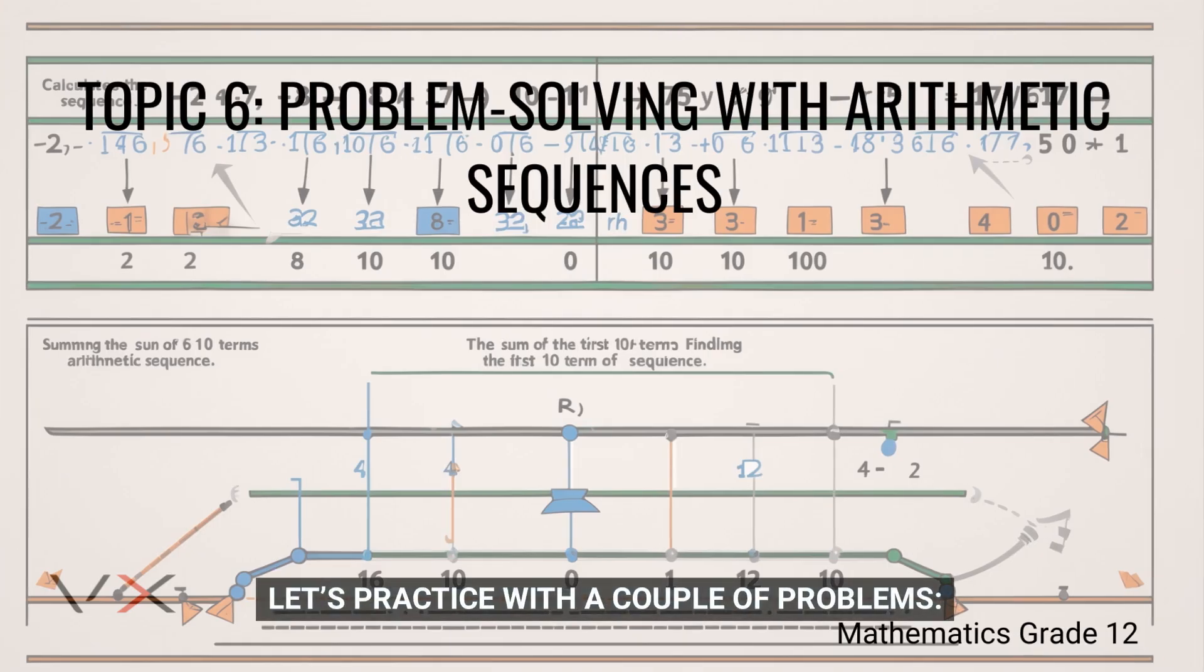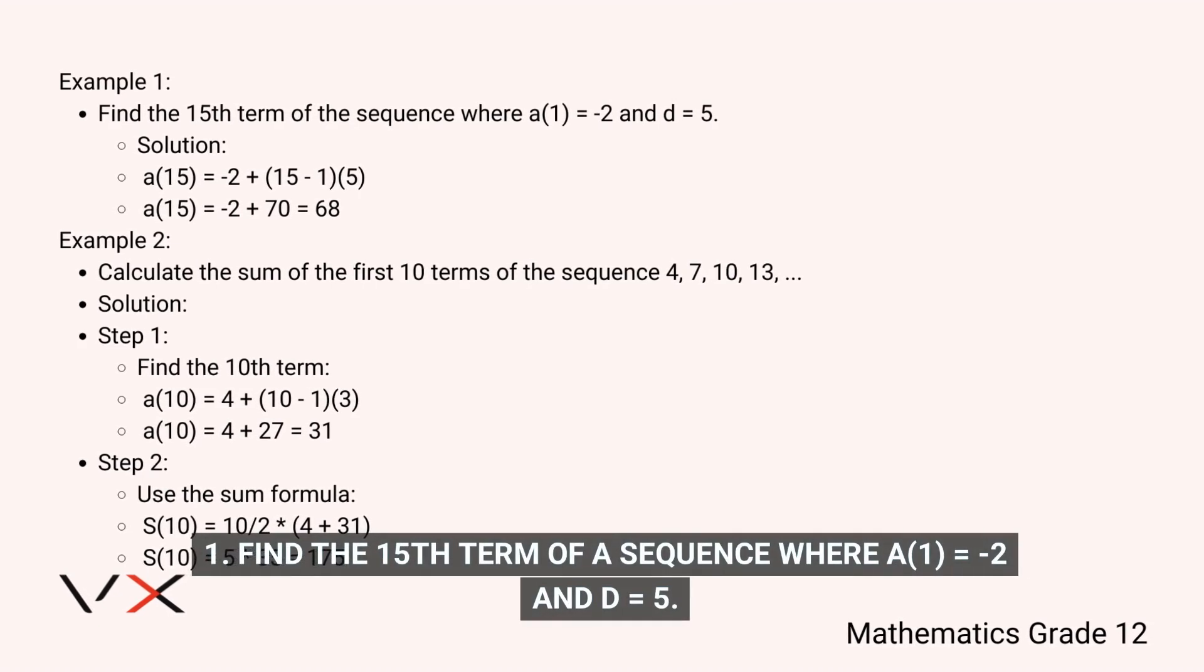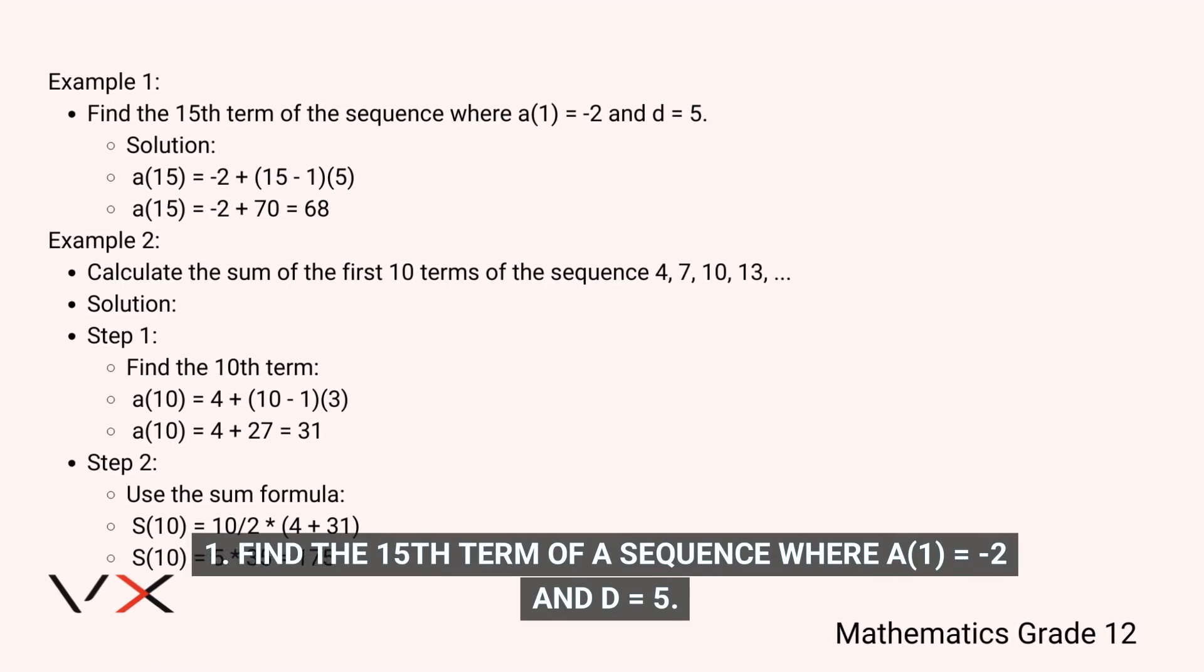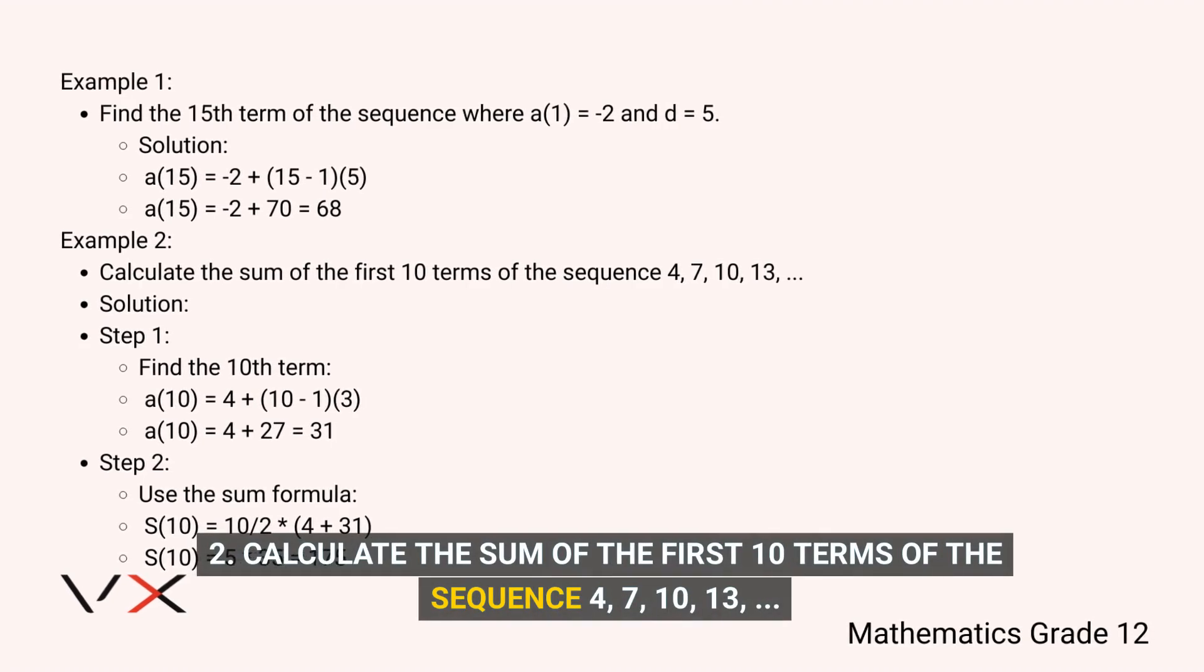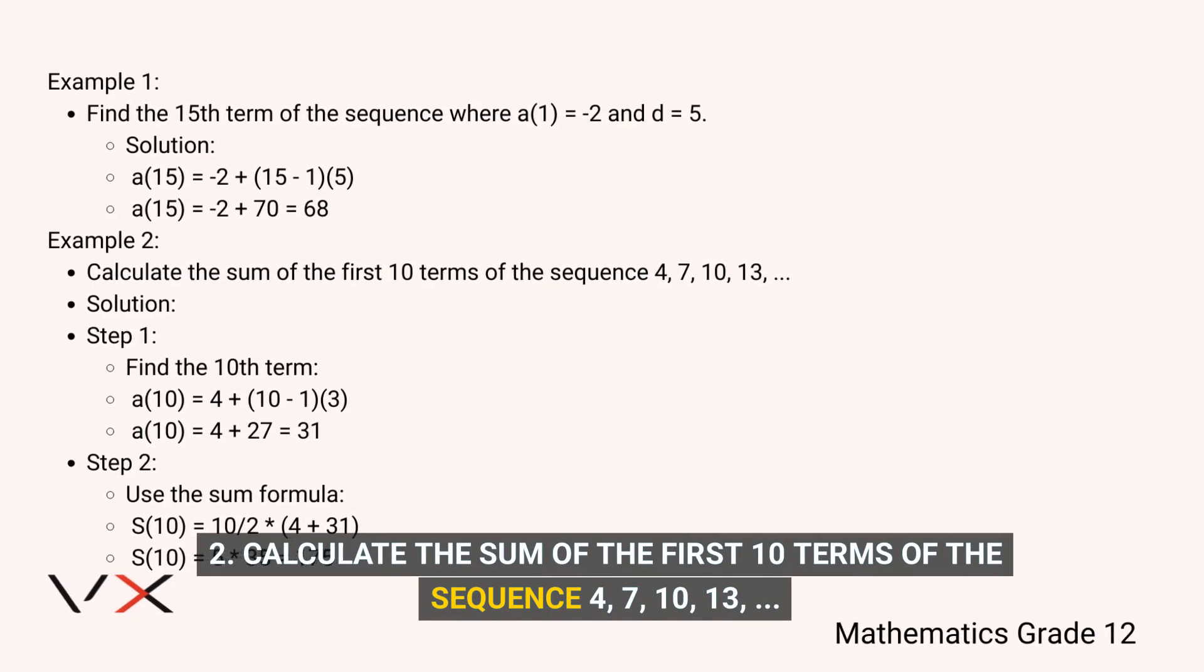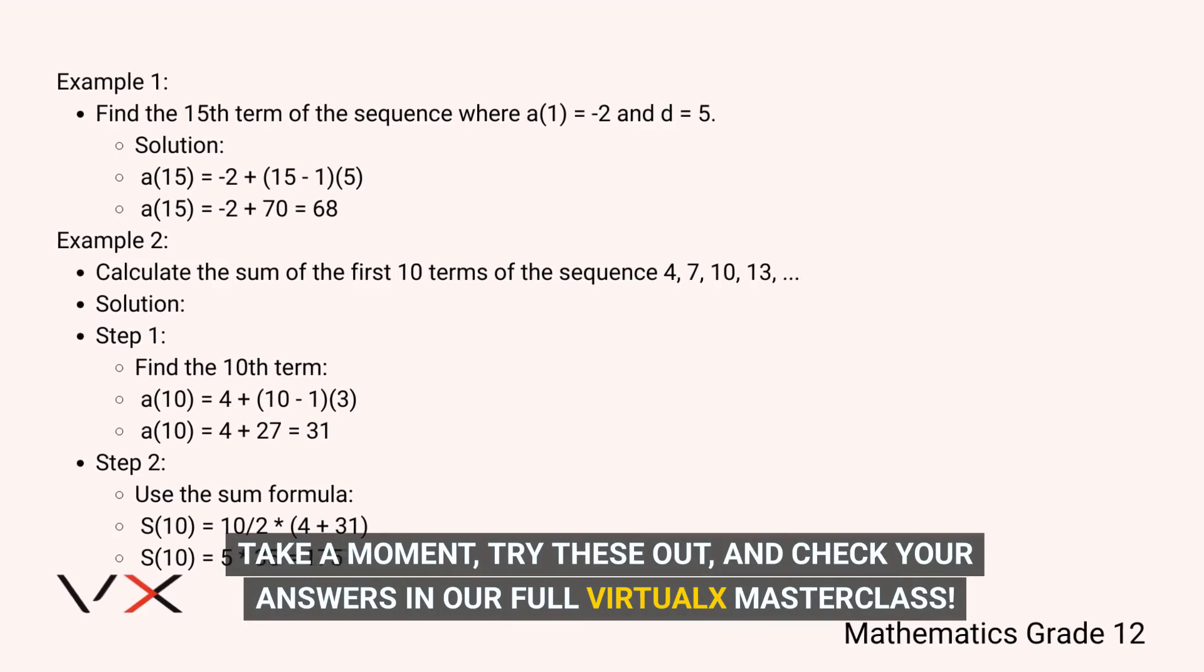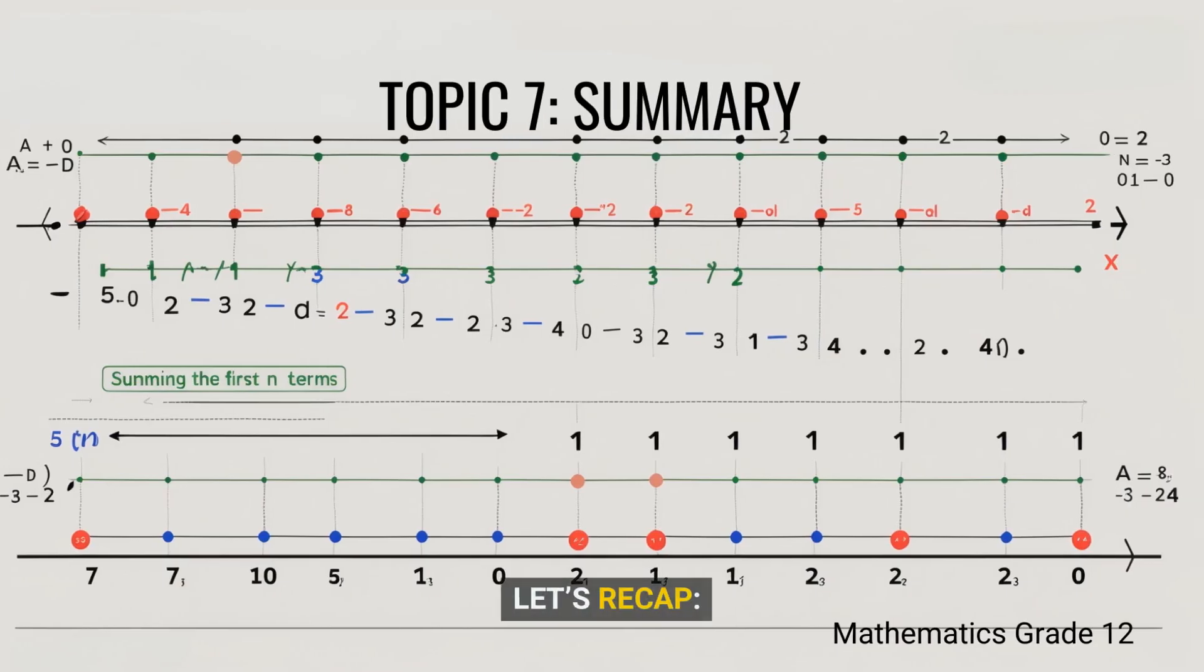Let's practice with a couple of problems. First, find the 15th term of a sequence where a(1) = -2 and d = 5. Second, calculate the sum of the first 10 terms of the sequence 4, 7, 10, 13. Take a moment, try these out, and check your answers in our full VirtualX masterclass.